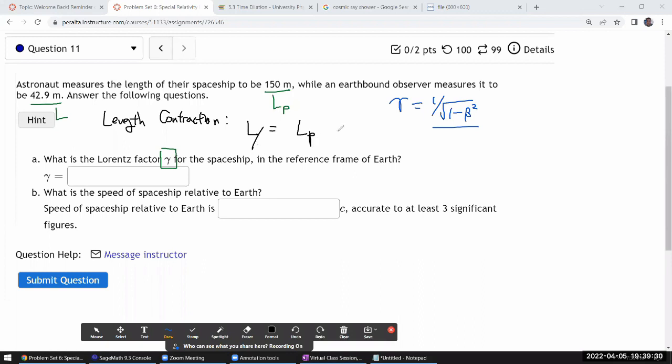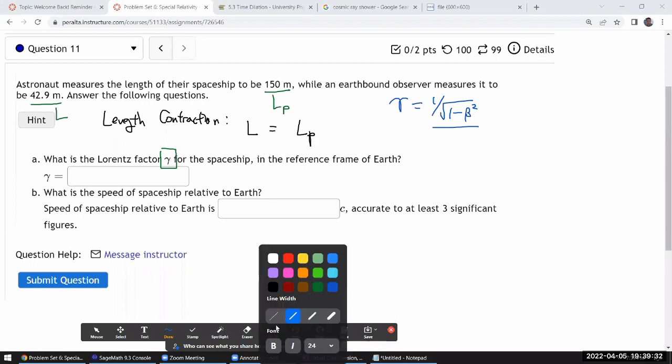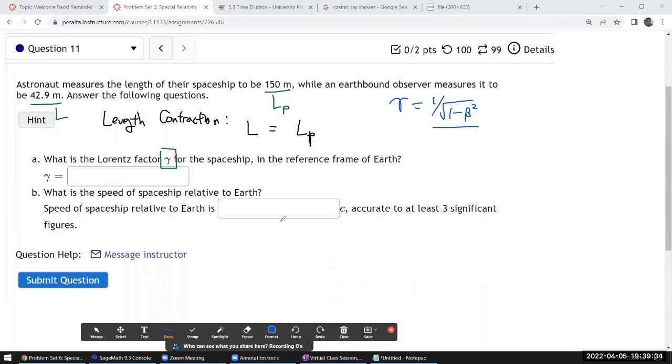So the phrase I remember that helps me remember correctly each time is moving rulers are short, which means L, which measures the moving ruler, it must be shorter than the proper length.